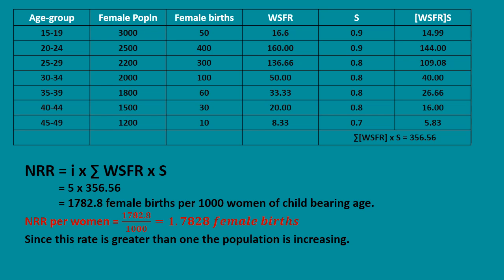For the 15 to 19 age group: 50 divided by 3,000 multiplied by 1,000 gives 16.6 births. For the 20 to 24 age group: 400 divided by 2,500 multiplied by 1,000 gives 160 births. This covers all age groups.